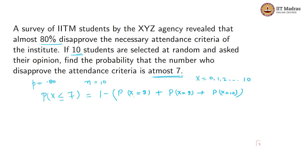What is the meaning here? Probability x equals 8 is when x takes value 8; when x takes value 9; when x takes value 10. That means: what is the probability that 8 students will disapprove the necessary attendance criteria? The probability that 9 students will disapprove the necessary attendance criteria, and 10 students will disapprove the necessary attendance criteria. Now you can apply the binomial formula.